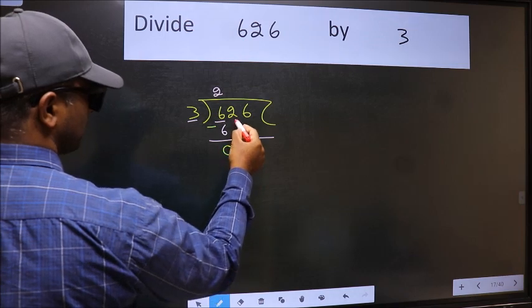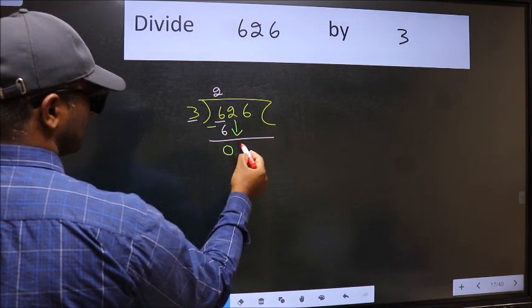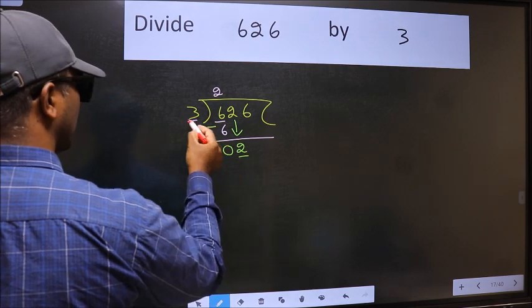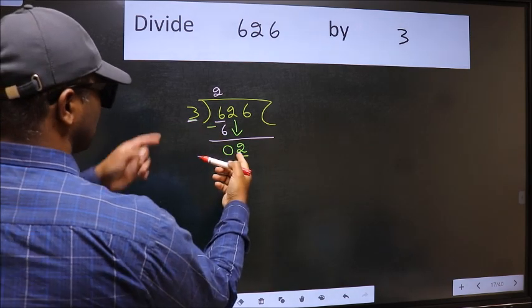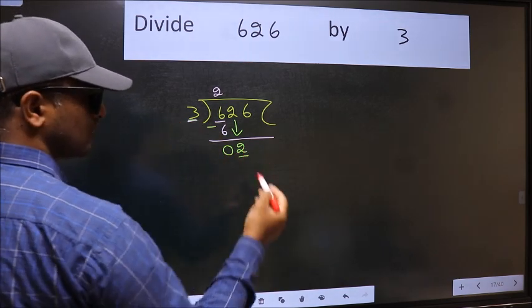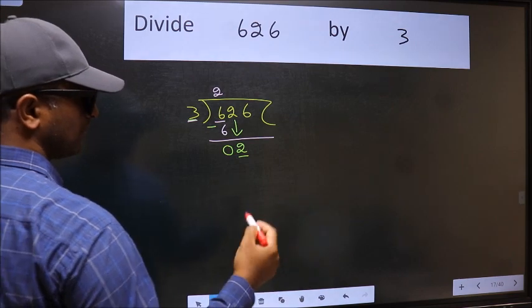After this, bring down the beside number. So 2 down. Now here we have 2 and here 3. 2 is smaller than 3, so we should bring down the second number.